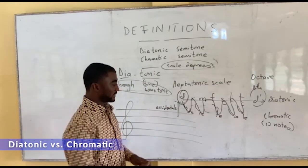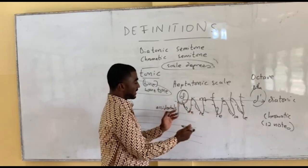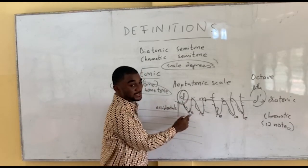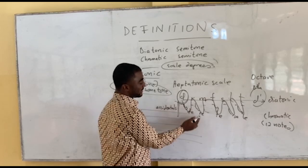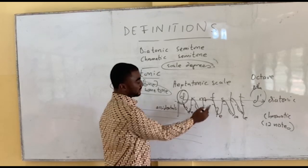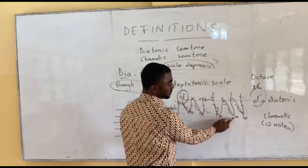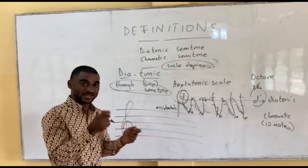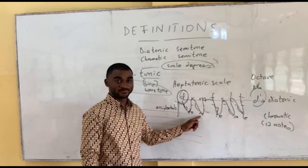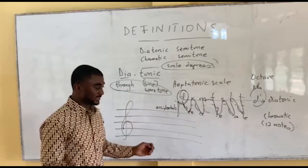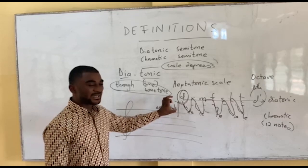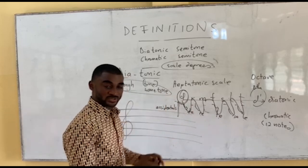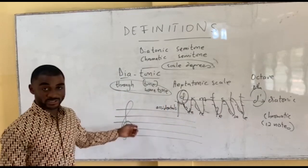Another important point is that you must know that these notes belong together. Do and di belong together; ri and re belong together; fa and fi belong together; so and si belong together; la and li belong together. They share the same letter at the beginning. There's a reason for this — this is important. These are degrees. So these two occupy the same degree. I'll come to that in a quick second when I join them on the staff.